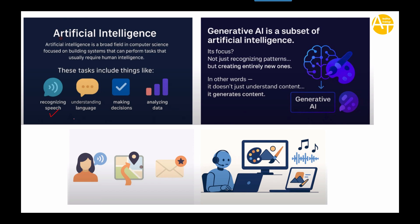Things which require human intelligence and behavior are part of AI. AI can recognize speech — like when you give a voice command to Siri or your Google Assistant. It can understand language, basically translating text into different languages. It can also make intelligent decisions and give you recommendations like your favorite movies, and it can analyze data.